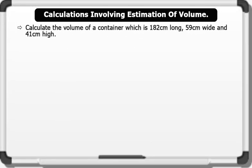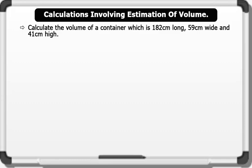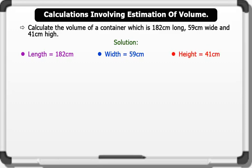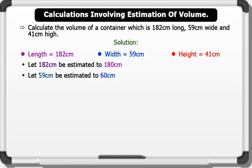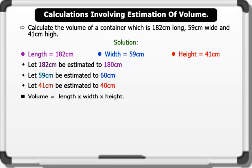Calculate the volume of a container which is 182 centimeters long, 59 centimeters wide, and 41 centimeters high. Solution: Note that length is 182 centimeters, width is 59 centimeters, and height is 41 centimeters. Following the general rule of estimation, let 182 centimeters be estimated to 180 centimeters, let 59 centimeters be estimated to 60 centimeters, and let 41 centimeters be estimated to 40 centimeters. Remember that volume equals length times width times height.